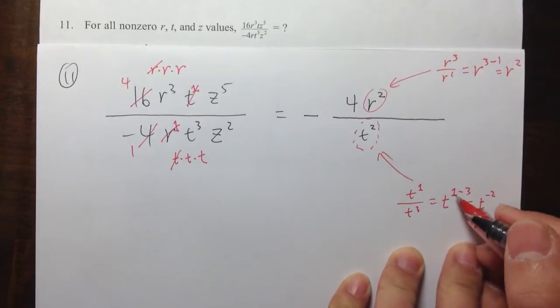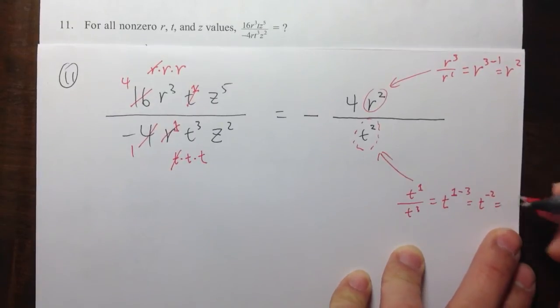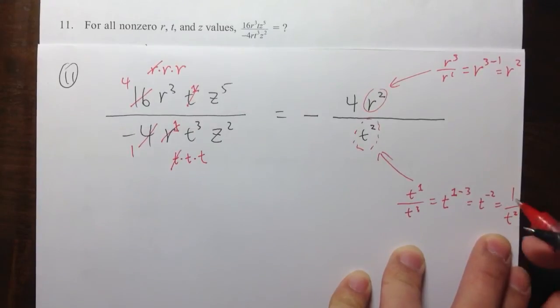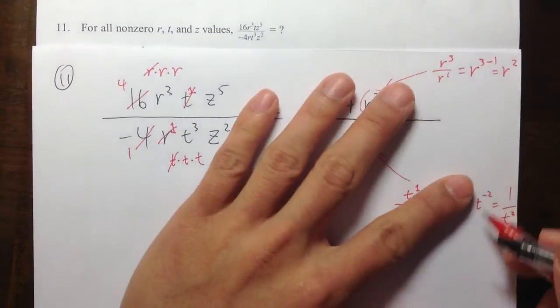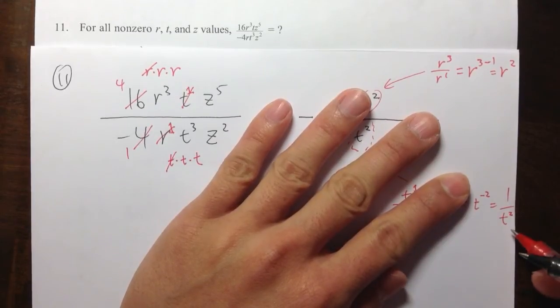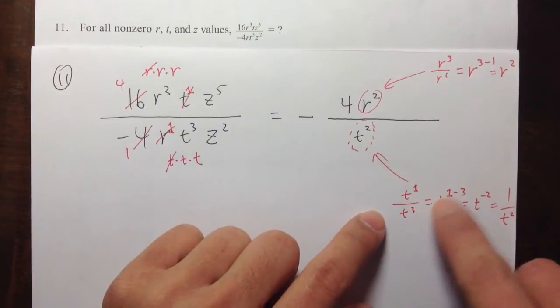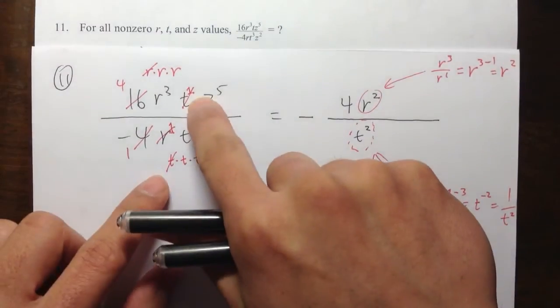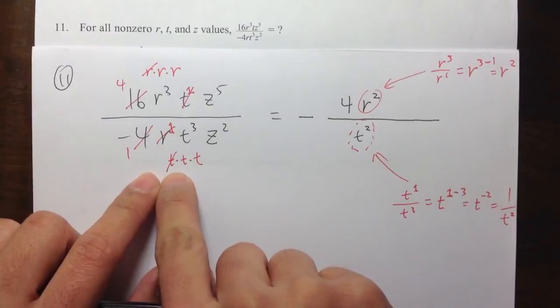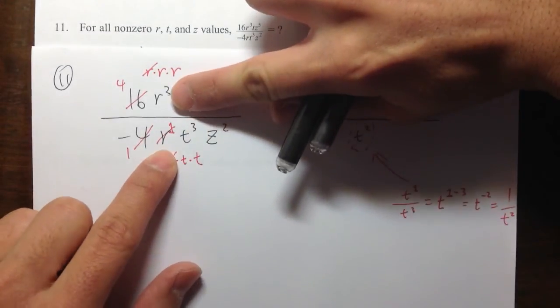So I have t to the 1 minus 3, which is t to the negative 2 power. And negative 2 exponent means we have 1 over t to the square, t to the second power. Whenever you have a negative exponent, you can just bring it down to the denominator and make the power positive. So that's exactly what happened here. So either way, you can use the formula by just subtracting the exponent, or you can just write down what does t to the third power mean, which is 3 of the t's multiplying together, and then see how many you can cross out and how many is left.